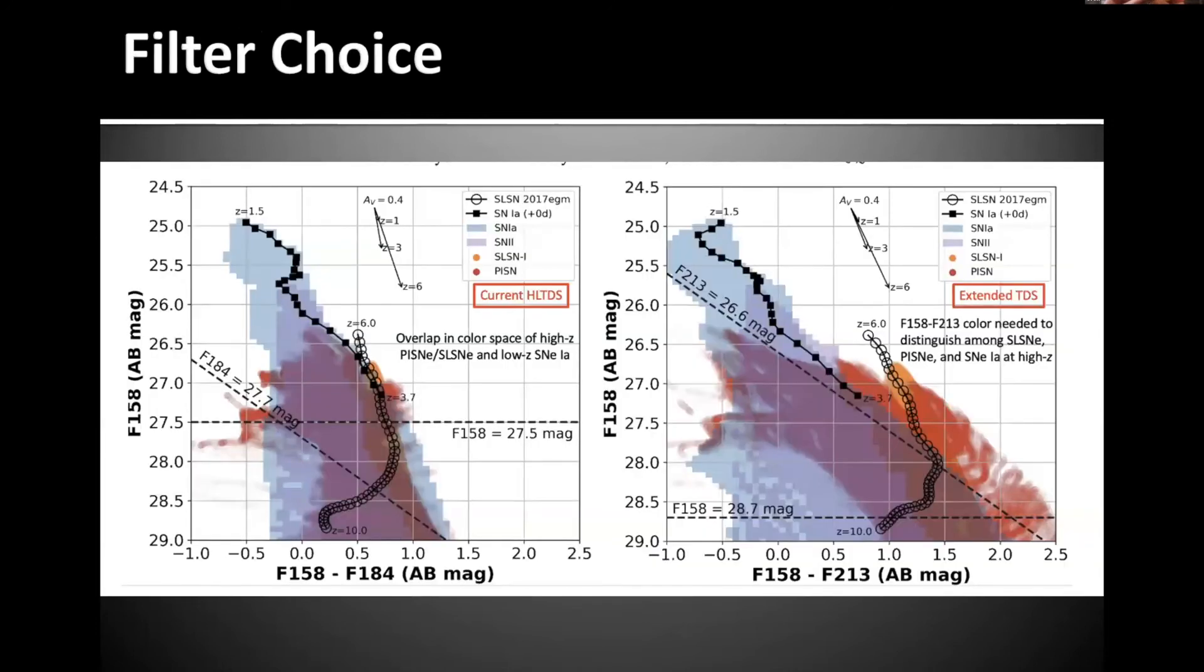Takashi showed this plot, but it's worth going over again, especially in the context of what I just said. These are color magnitude diagrams that highlight the phase space for different types of supernovae, such as 1As, type 2s, superluminous, and pair instability events. Overplotted are a few things. First, our color tracks for different red shifts, ranging from one and a half to about three for the type 1A model, and also a Z equals six to 10 for one of the superluminous events at 17 EGM. Also overplotted are our proposed depths for reasonable integration times. And as Takashi pointed out, to really do this and separate the pair instability from the superluminous events, you have to go out to F213 in color space, especially when you are considering reddening vectors.